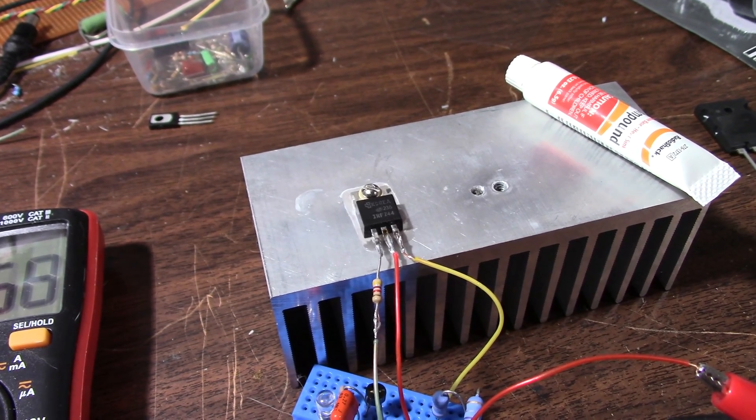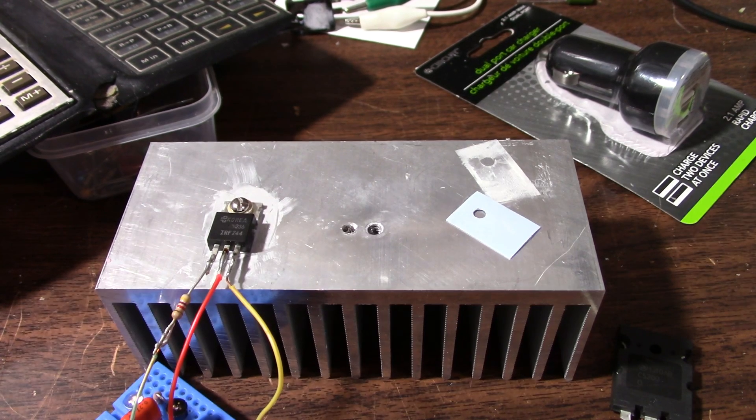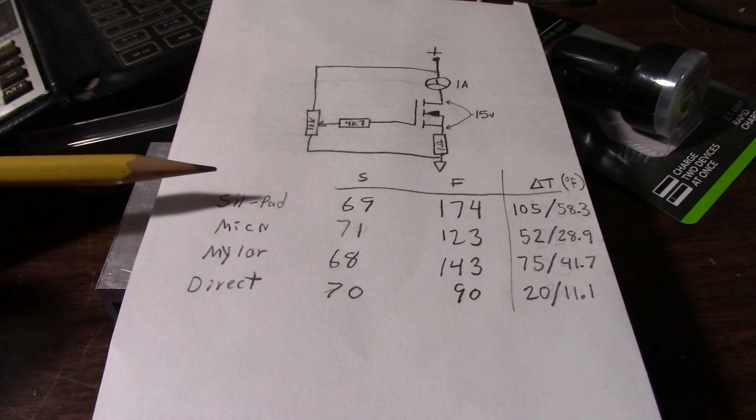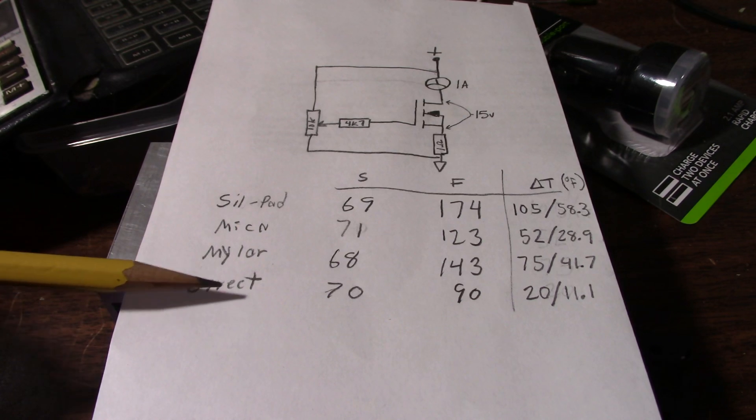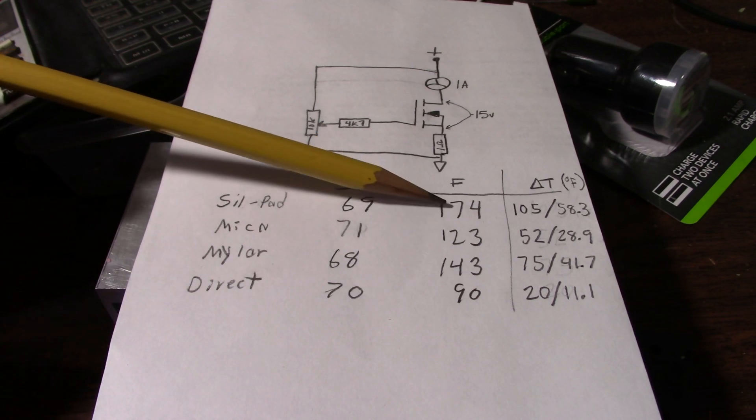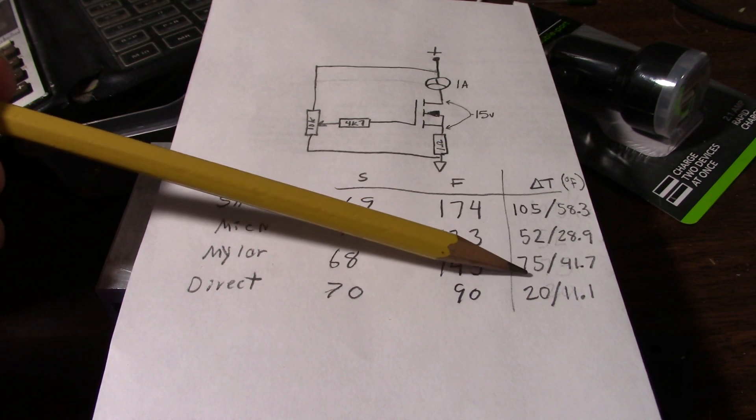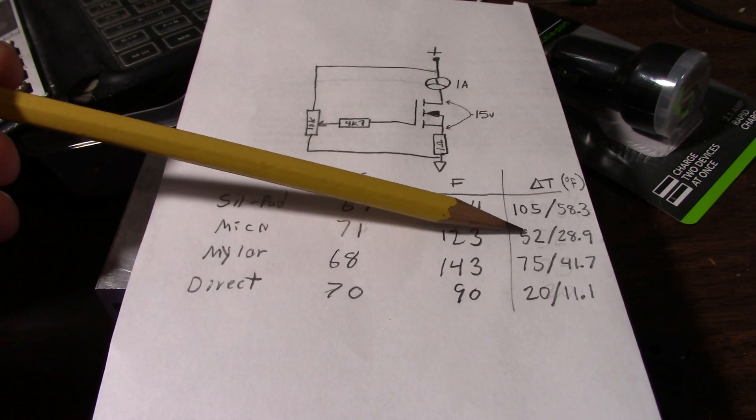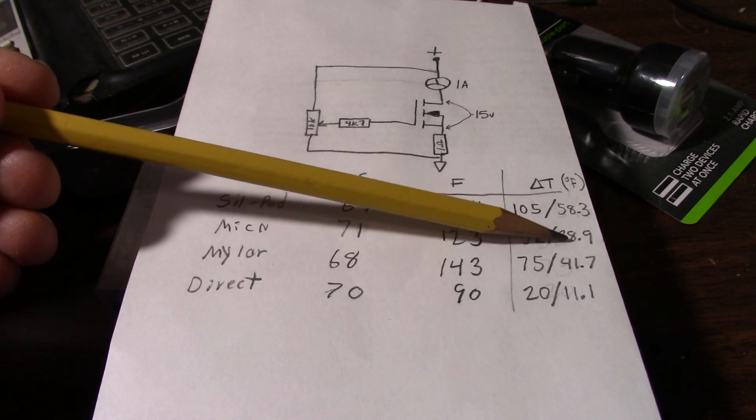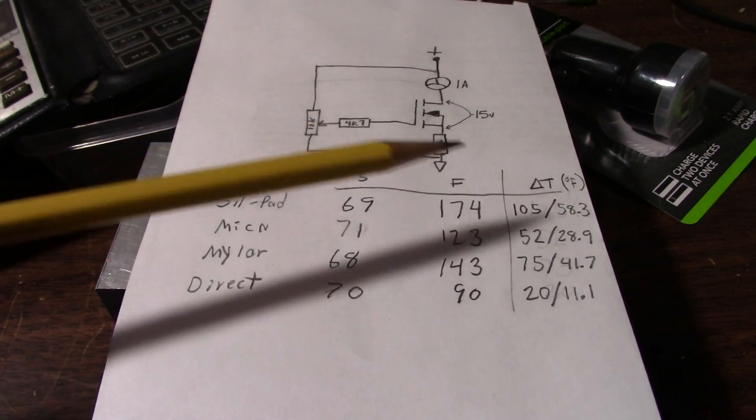And the results are in. Drum roll please. Here we go. Here are the materials, and of course direct on the heat sink. Starting temperatures, finishing temperatures. This is delta T, change in temperatures. This side or left side of the slash is Fahrenheit. And I also did converted to Celsius for people who might want to know that.